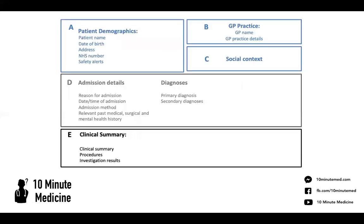So what are some of the things included in a discharge summary? Using this template made by the Royal College of Physicians, it covers every single thing that will be on any discharge summary regardless of the trust you're in. The things in blue — patient demographics, GP practice, social context — will all be auto-populated, so you don't need to particularly worry about them.